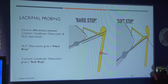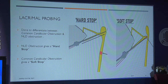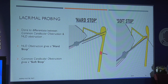Next is lacrimal probing. There are two stops: a hard stop and a soft stop, used to differentiate between common canaliculus obstruction and nasolacrimal duct obstruction. With common canaliculus obstruction, because of the obstruction present, you will get a soft stop. With NLD obstruction, the probe directly hits the bone, giving you a hard stop. So: hard stop means NLD obstruction; soft stop means common canaliculus obstruction.